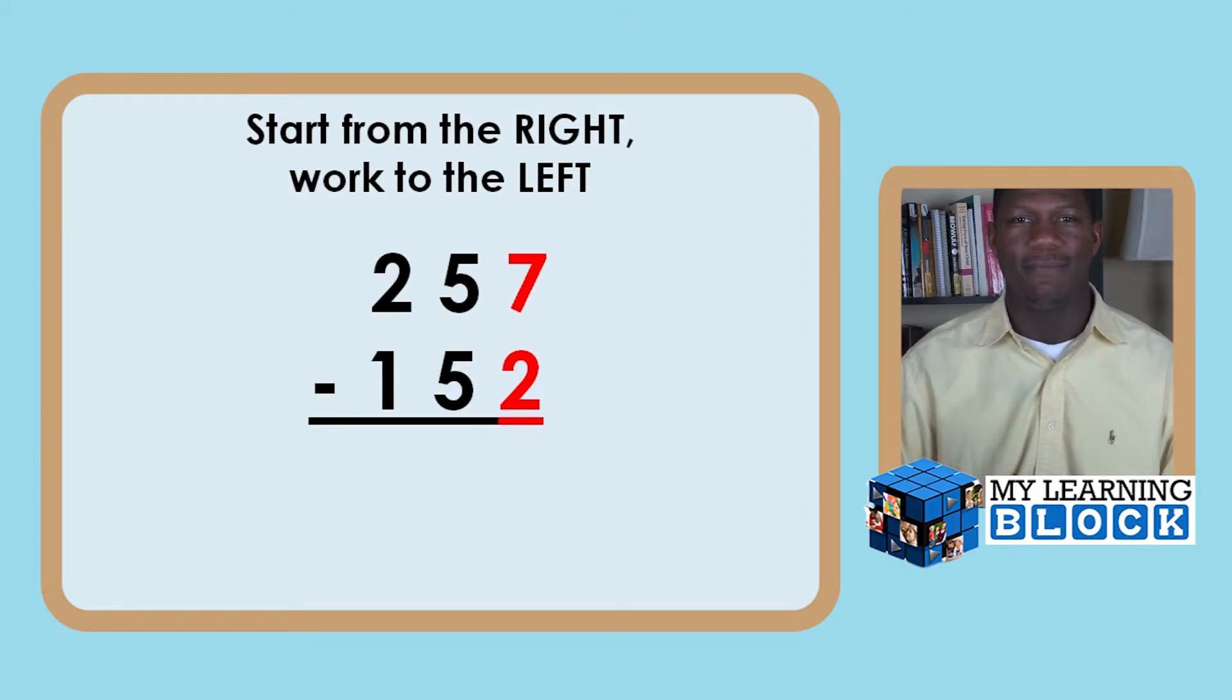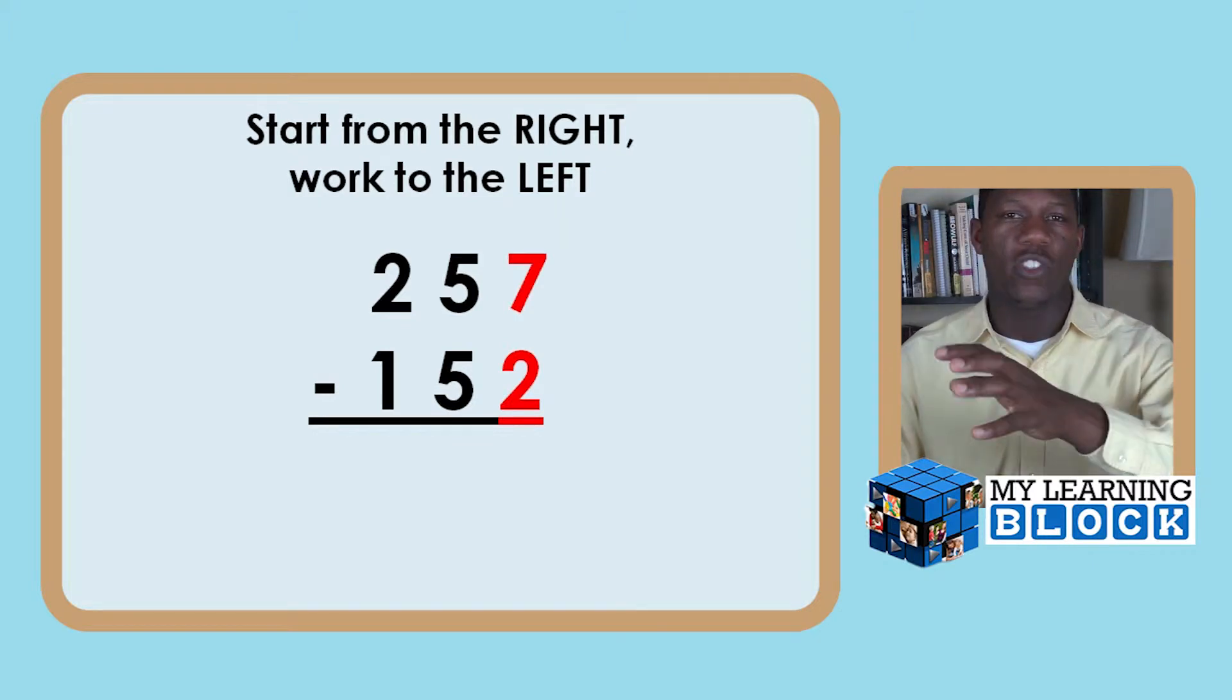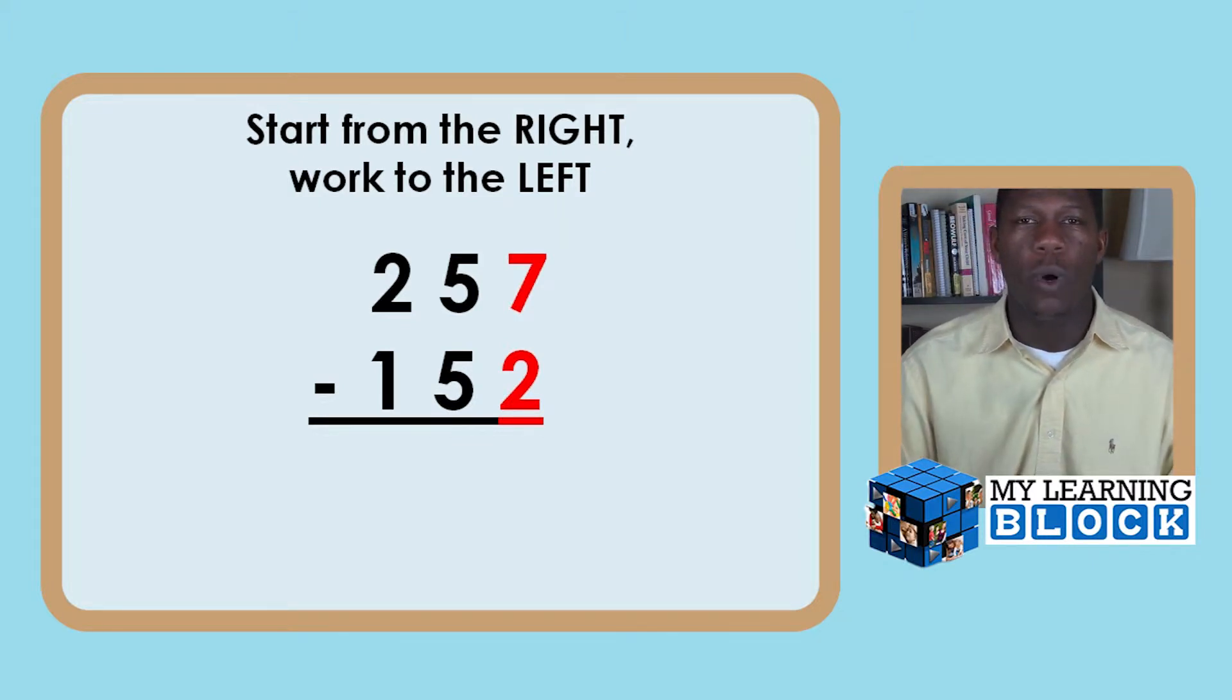At least in this process, it really helps with regards to multiplication in a certain way. So we're going to work from right to left, so go ahead and teach your child to start over there in the ones place, and then they'll go to the tens place and then the hundreds place. The way we do this is we are going to simply subtract seven minus two.